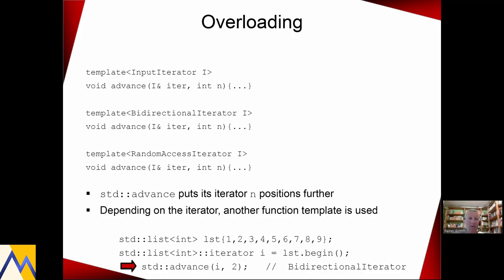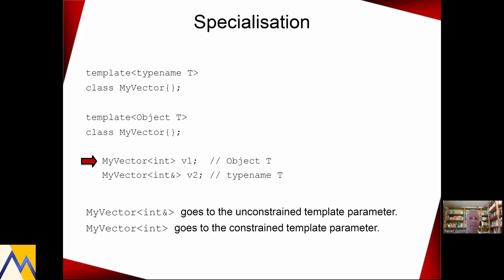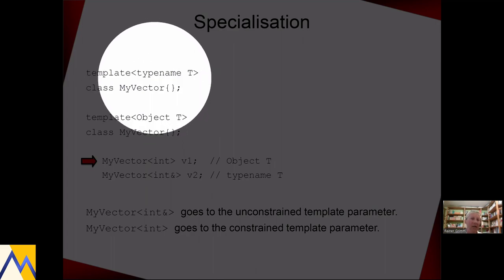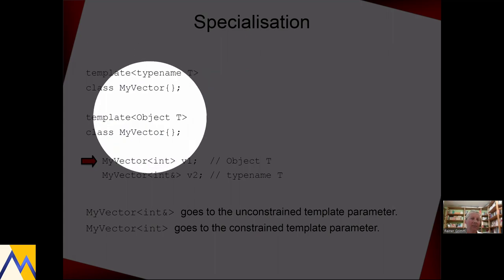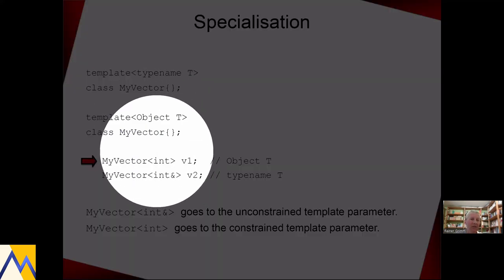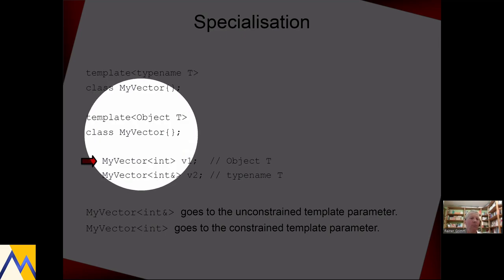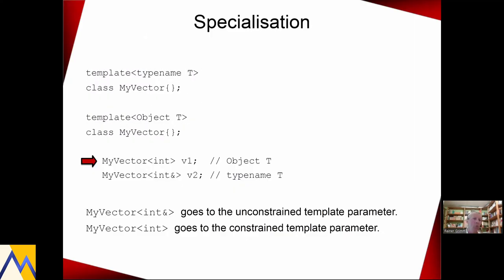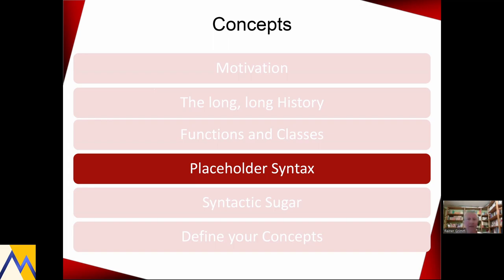Of course, we can specialize on a concept. Here's the primary or general template — it takes all type parameters, typename T. And here is the specialization for Object. If I instantiate my vector for an int, int is an object, so this specialization would be chosen. If I use it with an int reference, the general version would be chosen. So concepts also support specialization of class templates.